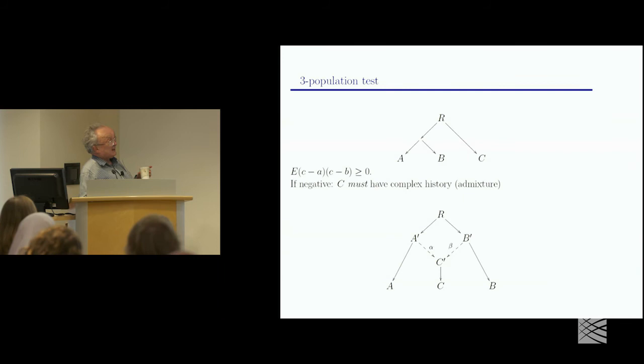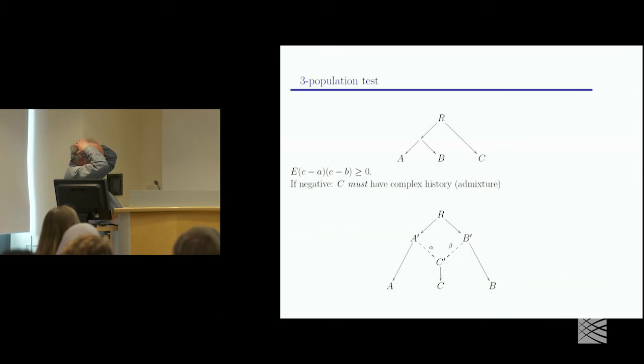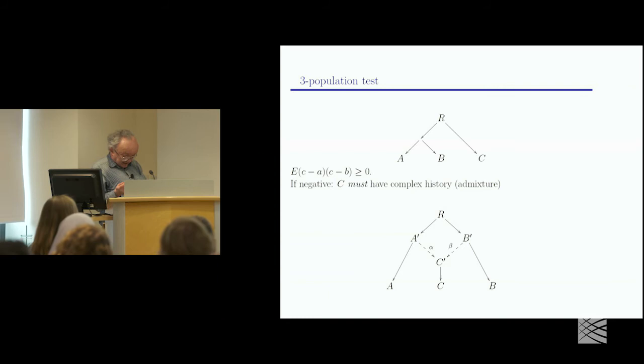So now I want to, I'm running a little slow here I now want to talk about the three population test and this is actually, I think the four population test is actually something that was sort of known. The idea of testing a clade by looking for no estimated difference is very obvious this is actually a little bit more subtle I think.